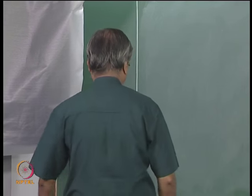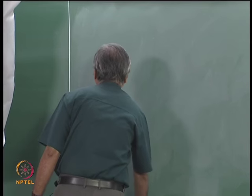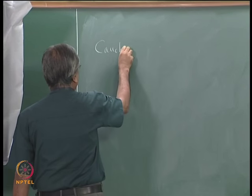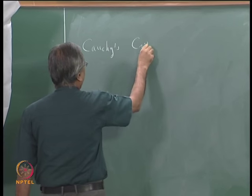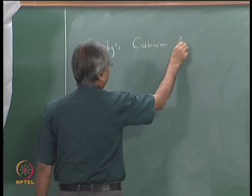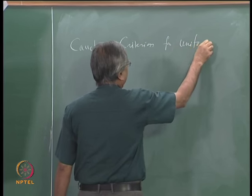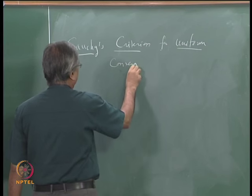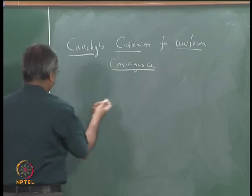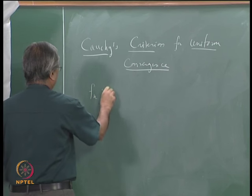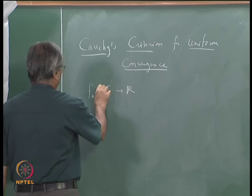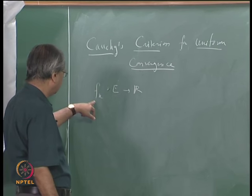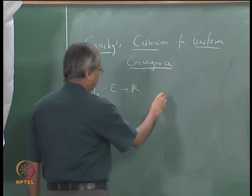We were to consider what is called Cauchy's criteria for uniform convergence of a sequence of functions. Let us begin with Cauchy's criteria for uniform convergence. As usual, we will take a sequence of functions f_n from E to R and we shall say that this sequence of functions satisfies Cauchy's criteria.